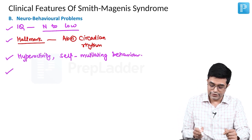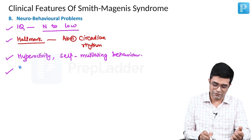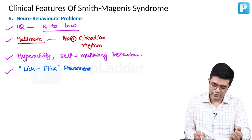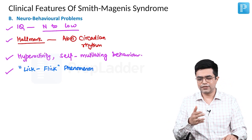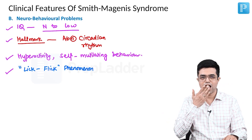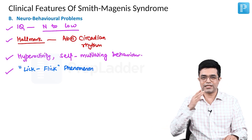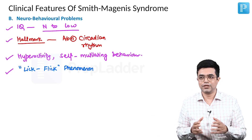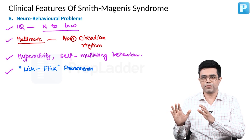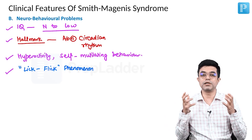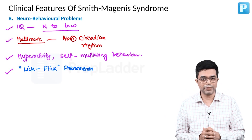In addition, these patients show a characteristic behavior called the lick-flick phenomenon. Many people habitually wet their fingers when turning pages or counting currency notes — that is considered a normal habit. But in Smith-Magnese syndrome, the lick-flick phenomenon is an irresistible urge that is found in these individuals and is a recognized behavioral feature of the syndrome.